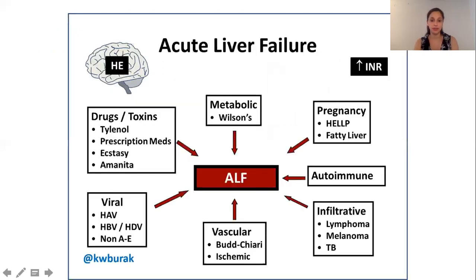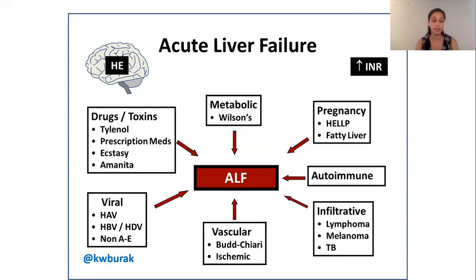The causes of acute liver failure are very important because the cause determines how you manage the patient. In Britain, the most common cause is paracetamol toxicity. Other drugs that can cause acute liver failure include rifampicin, isoniazid, and sodium valproate. Viral causes are amongst the most common cause worldwide. Vascular causes such as Budd-Chiari syndrome or ischemic causes, infiltrative ones such as lymphoma, melanoma and TB, as well as autoimmune conditions, pregnancy such as HELLP and fatty liver, and metabolic conditions such as Wilson's disease.